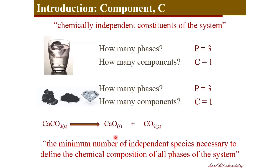The number of components is technically defined as the minimum number of independent species necessary to define the chemical composition of all phases of the system.